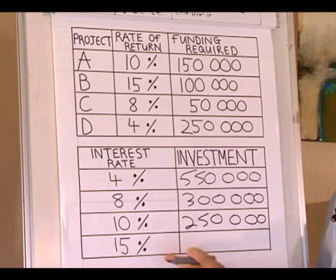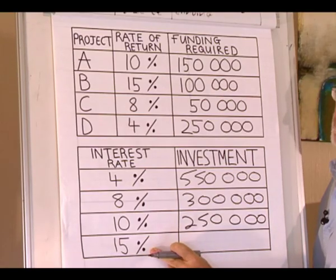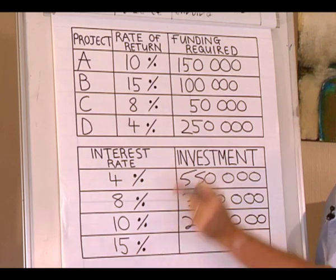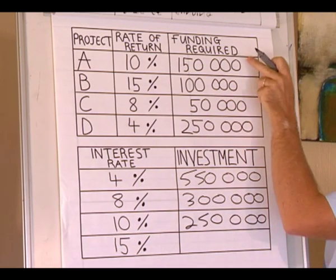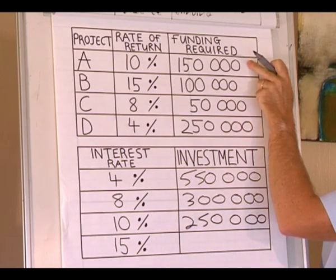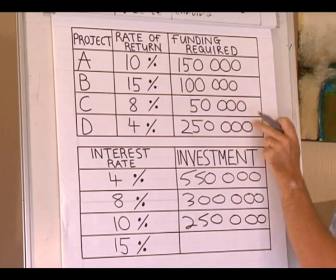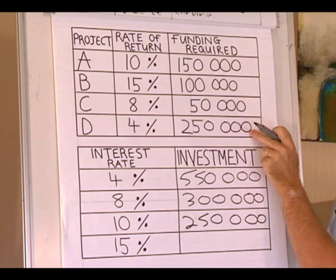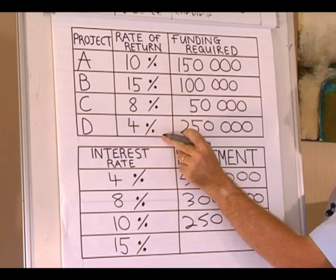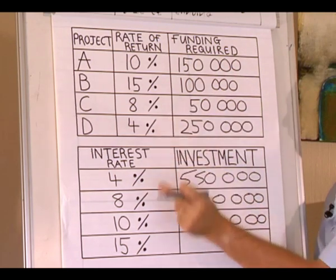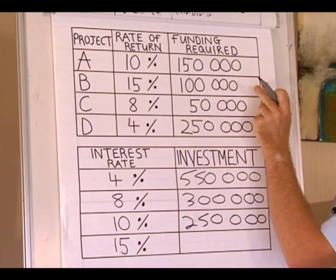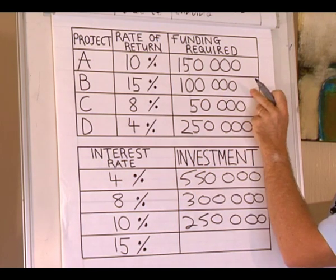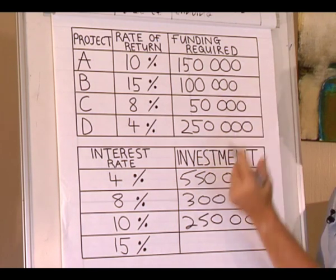At an interest rate of 15%, only project B is viable. The rate of return for projects A, C, and D — 10%, 8%, and 4% — are all less than 15%, so only project B is viable.